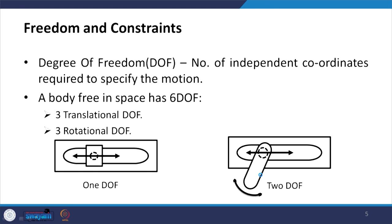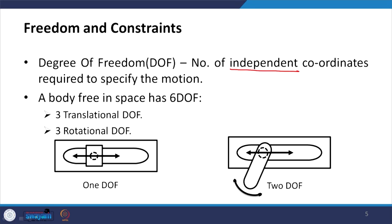In mechanical systems, we often talk about degrees of freedom and constraints — very important terms when describing mechanisms such as robots. The technical definition of degrees of freedom is the number of independent coordinates required to specify the motion. 'Independent' is the key word; only independent coordinates can be called degrees of freedom.